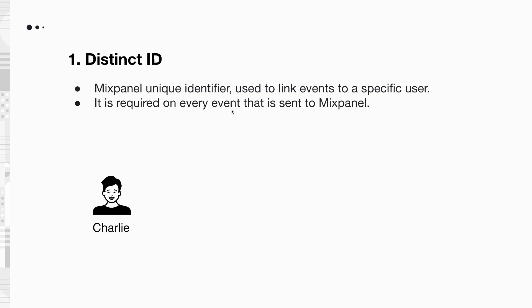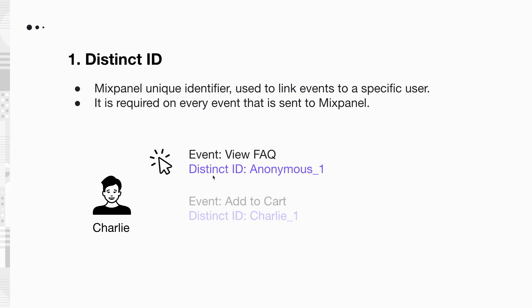For example, consider Charlie, a user of your product. When he browses your website anonymously, he will trigger events with an anonymous ID as the Distinct ID. Once Charlie logs into your website, he will start triggering events with his user ID as the Distinct ID to Mixpanel.